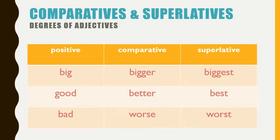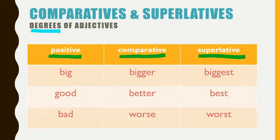Now let's talk about some adjectives. Adjectives are your describing words. They describe a noun or pronoun, and adjectives come in three flavors. They are called the three different degrees of adjectives: the positive, the comparative, and the superlative.